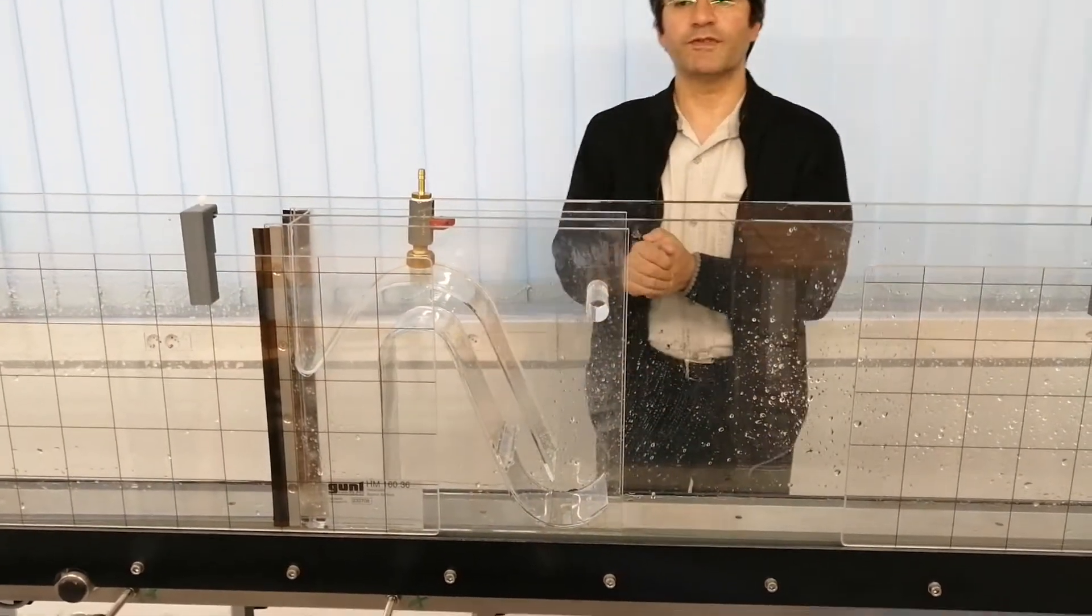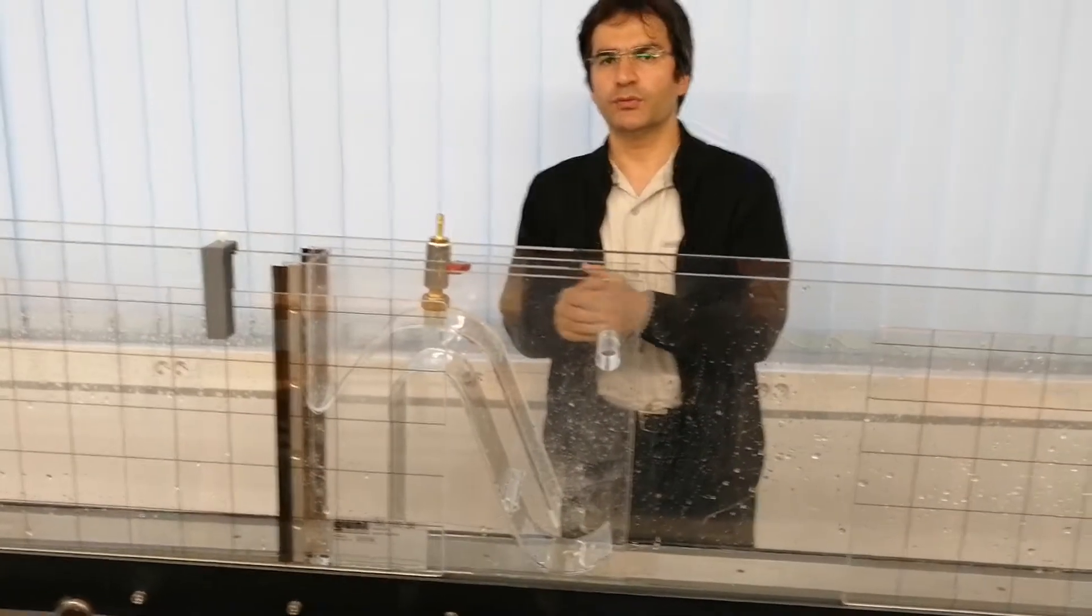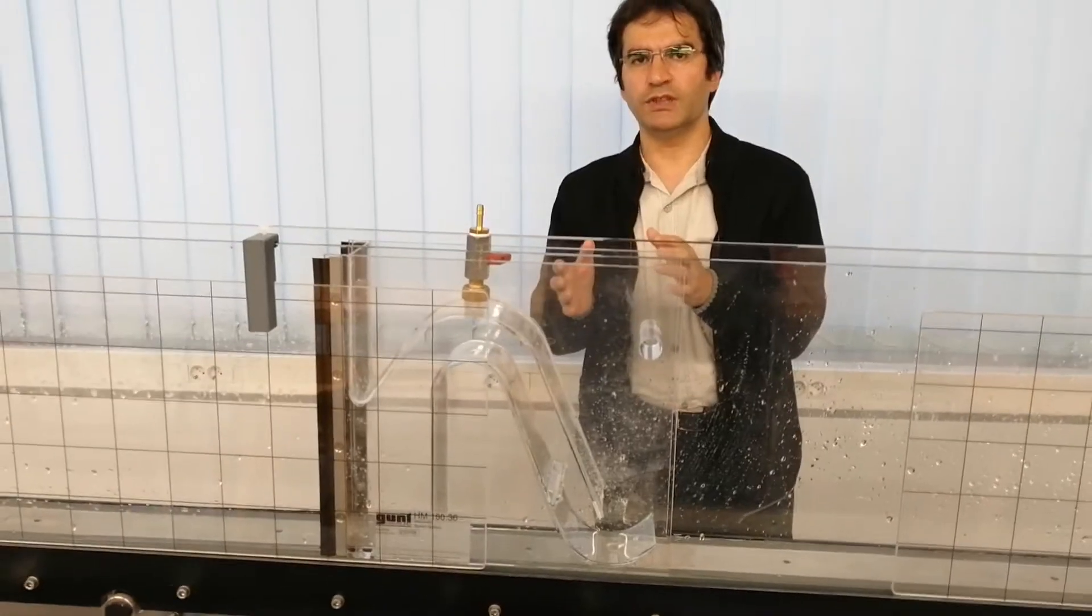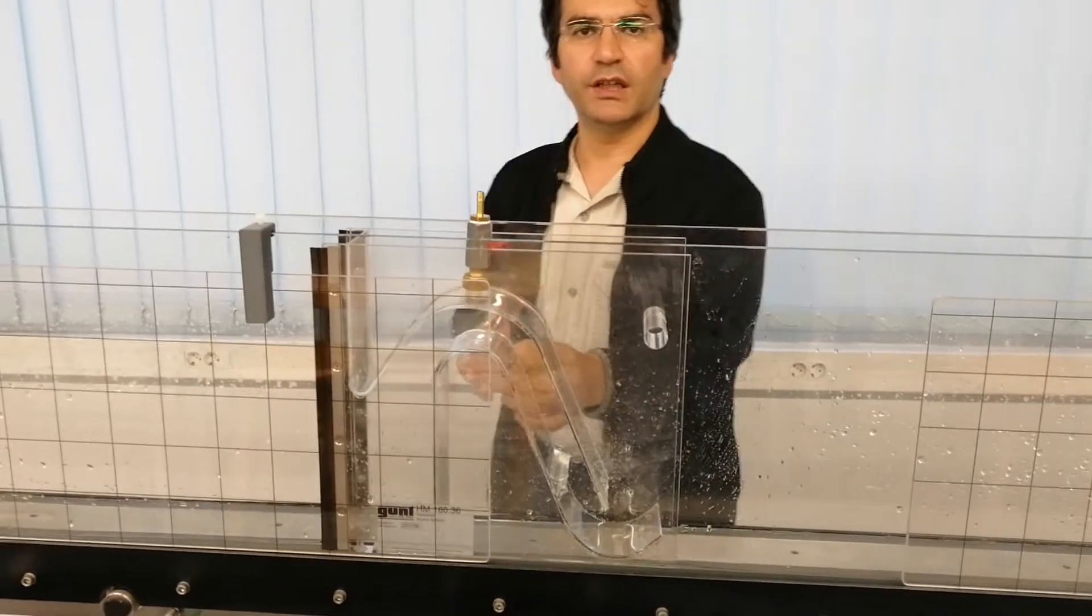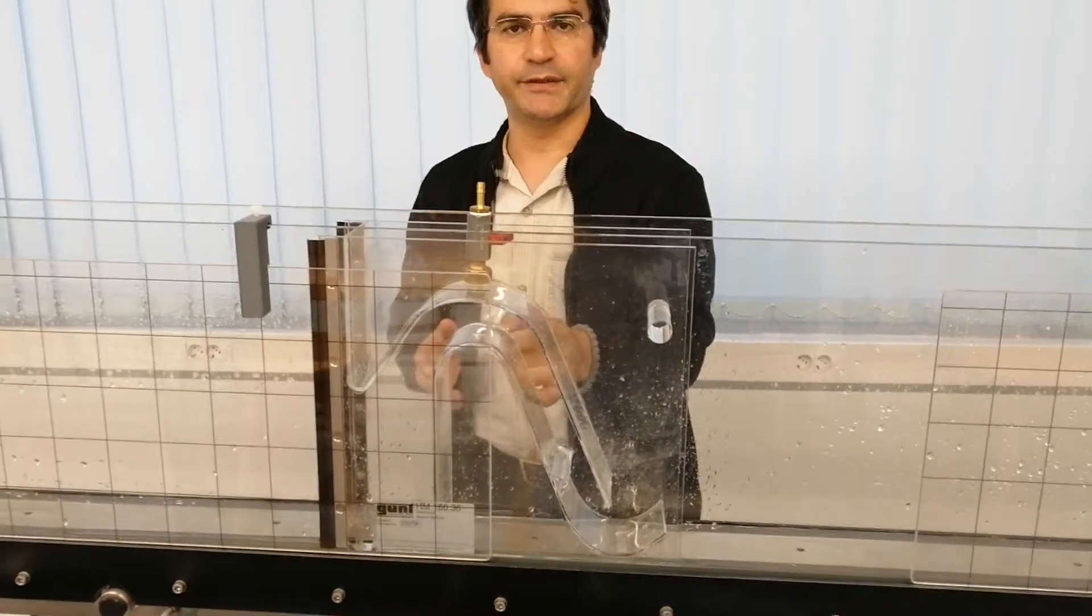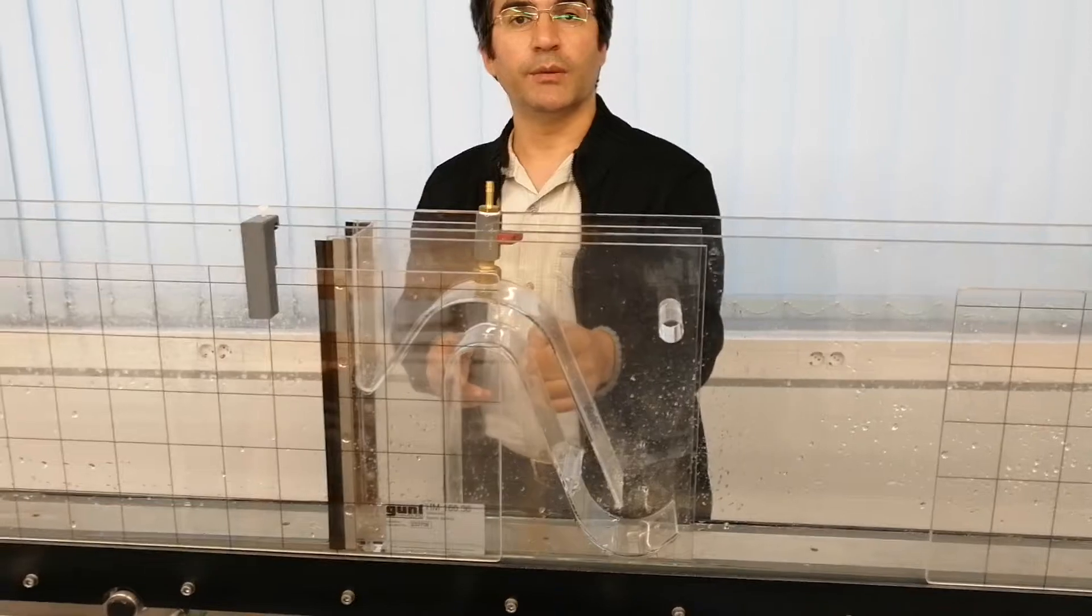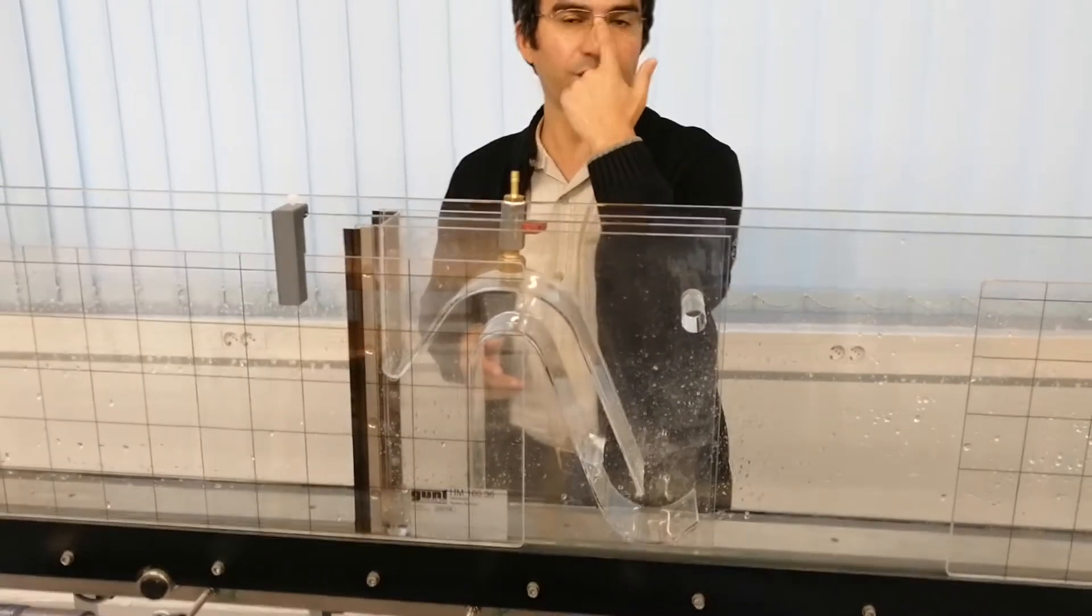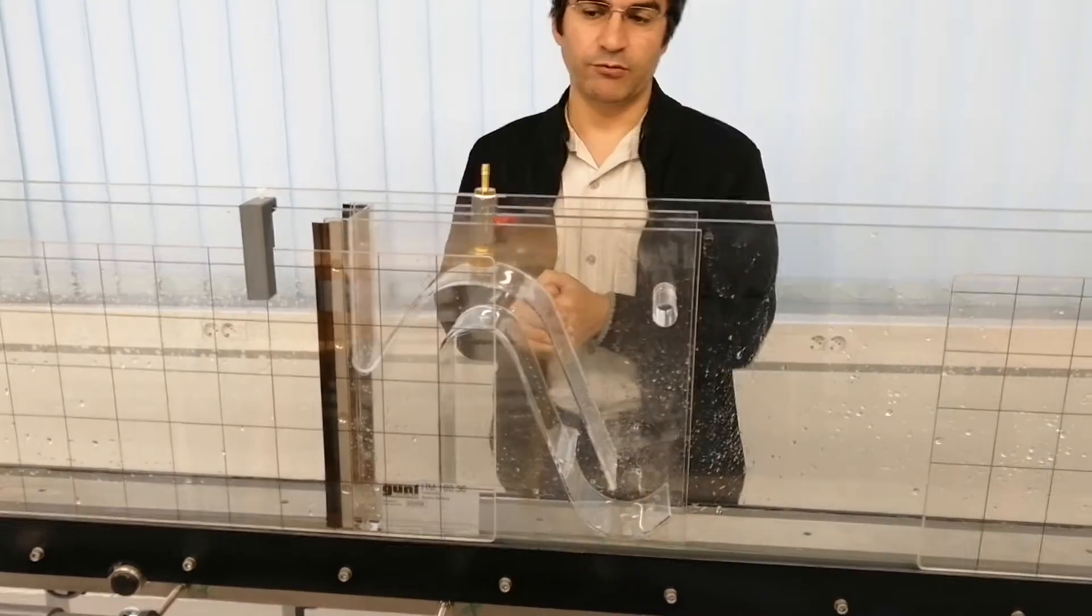This type of siphon weir is needed when you want to discharge high volumes of water in a short time. This type of weir can be used in dams as siphon spillways. Siphon spillways are very important in managing floods. Excessive water can be moved to downstream by using this type of weir.